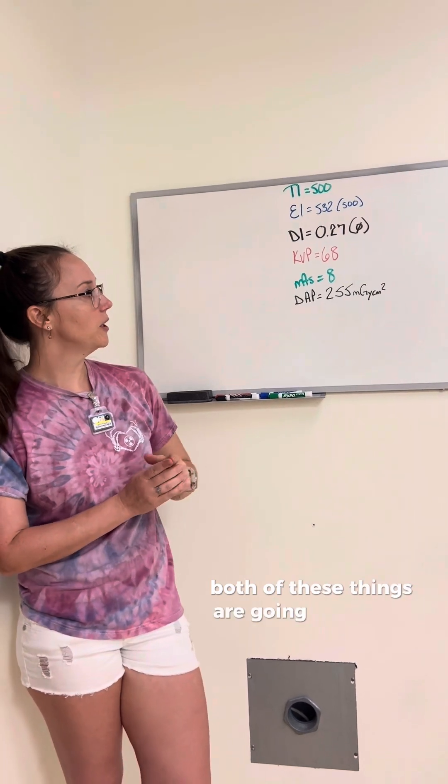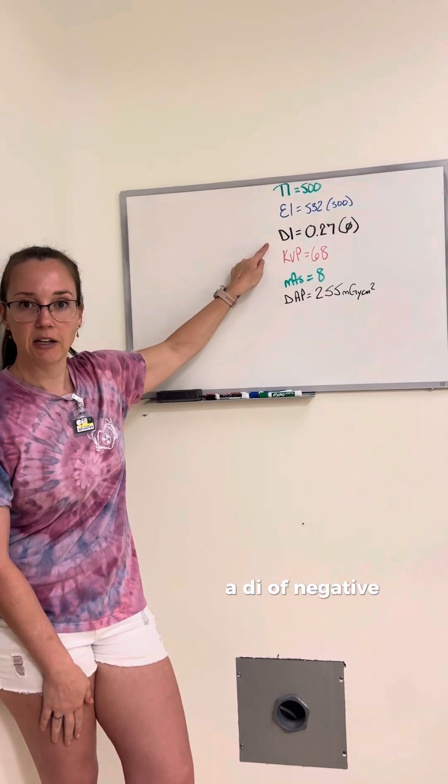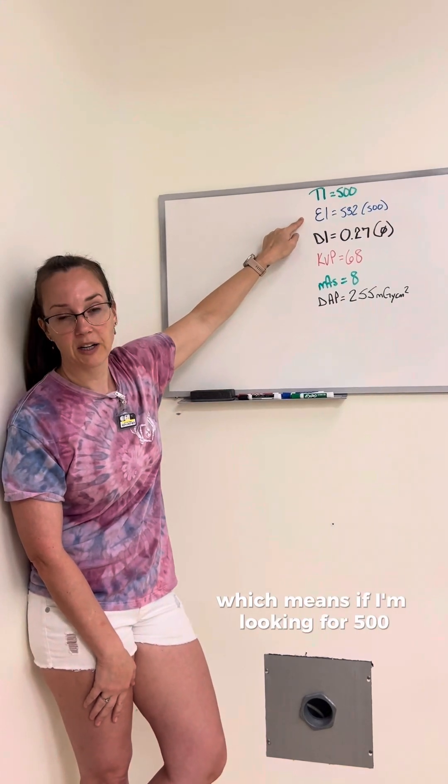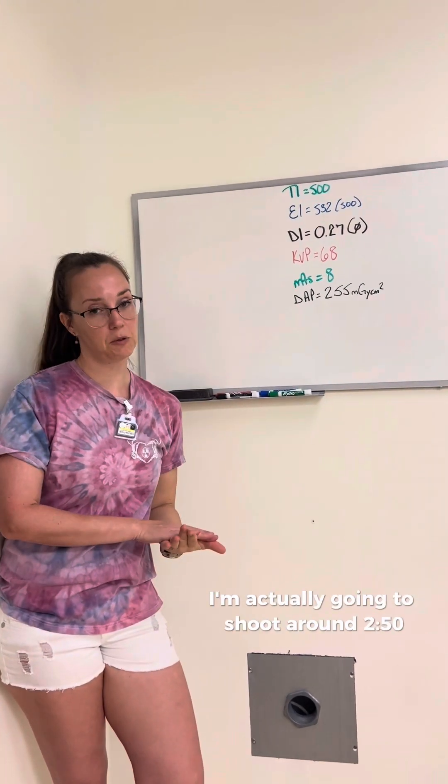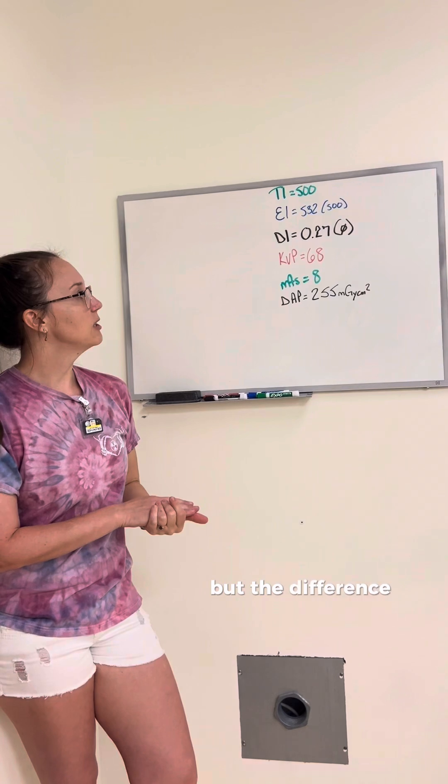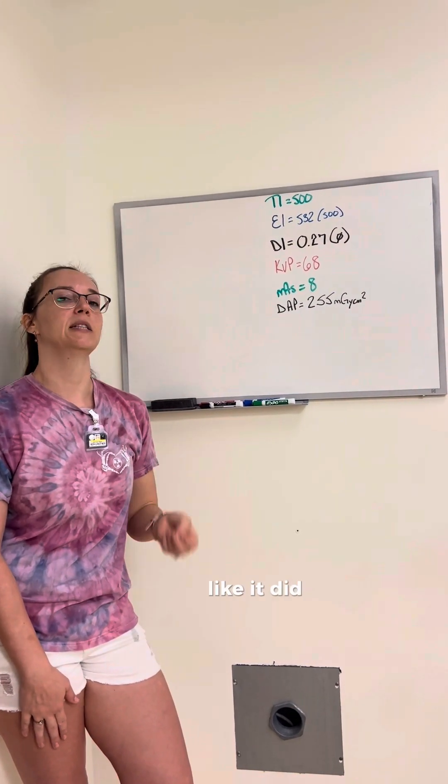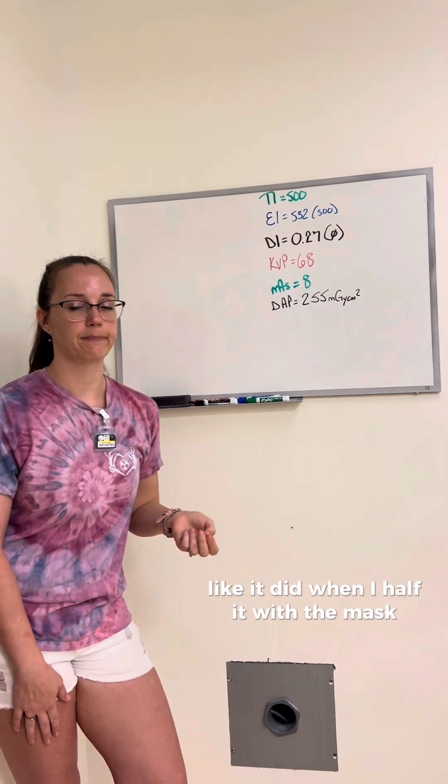Both of these things are going to end up shooting us a DI of negative 3, which means I'm half underexposed, which means if I'm looking for 500, I'm actually going to shoot around 250. But the difference is when I bring KVP down, it's not going to half my dose like it did when I halved it with the mass.